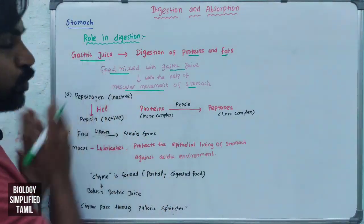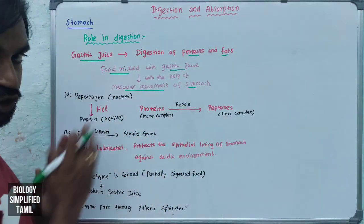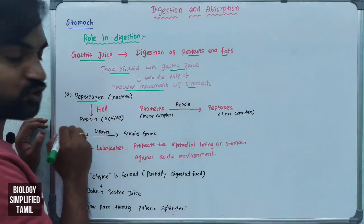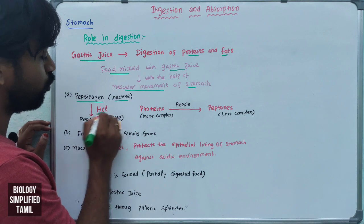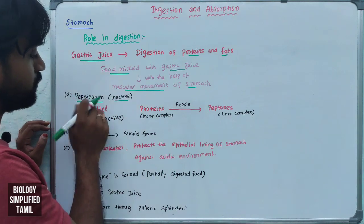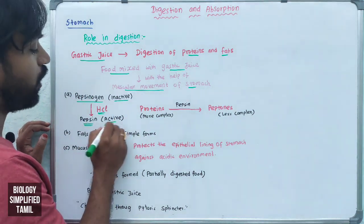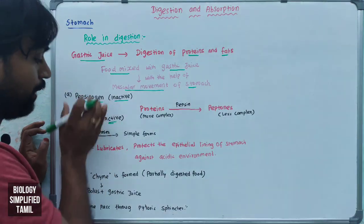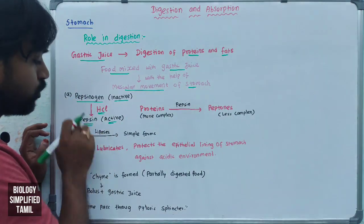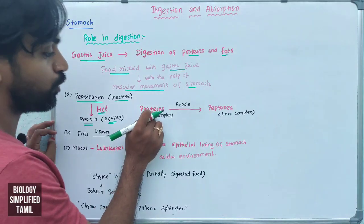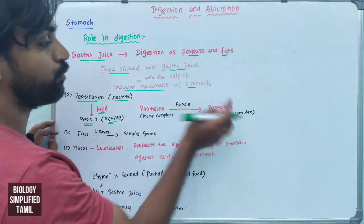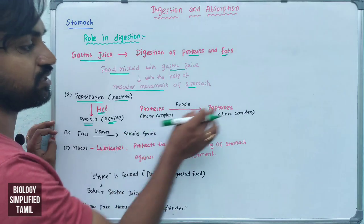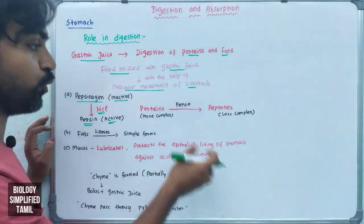Now about enzymes and gastric juice: the hydrochloric acid activates pepsinogen into pepsin. So pepsinogen is activated by HCl, and pepsin becomes active. Pepsin then digests proteins — proteins are complex, and pepsin converts them into peptones and proteoses, which are less complex.